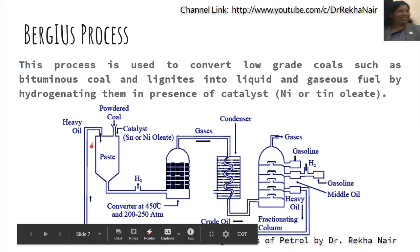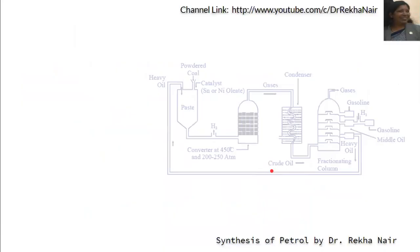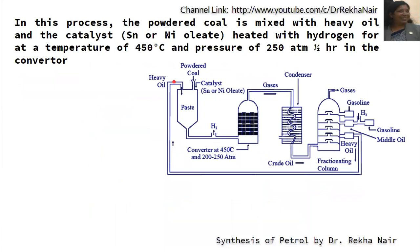This mixture is sent into the converter and then into the cooler or condenser, and then into the fractionating column. The powdered coal is mixed with heavy oil and a catalyst — tin or nickel. This paste is treated and heated with hydrogen at a temperature of 450 degrees centigrade and at a pressure of 250 atmospheres for half an hour in the converter.